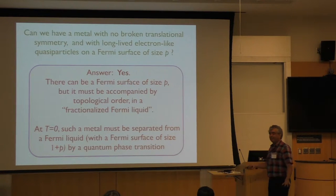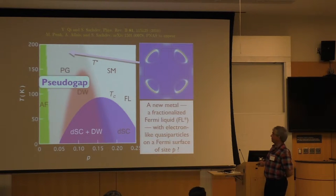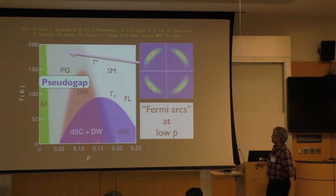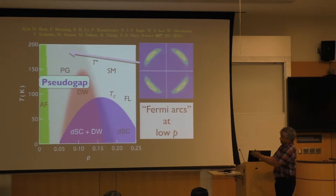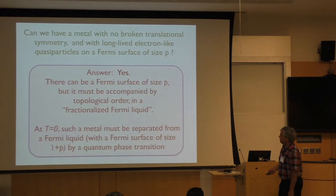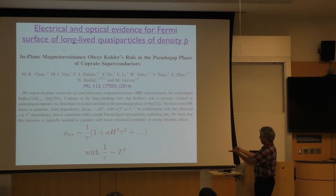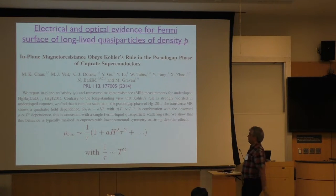I just spent the last hour explaining how you can get such a state. So our proposal is that this state here and what's being seen in the photoemission is really like a remnant of this state. There is in fact something on the other side — it's just that at these high temperatures it gets... So what we are saying about this state here, which we think of as high temperature relative to J, is actually low temperature — it's almost like the ground state of some metal.